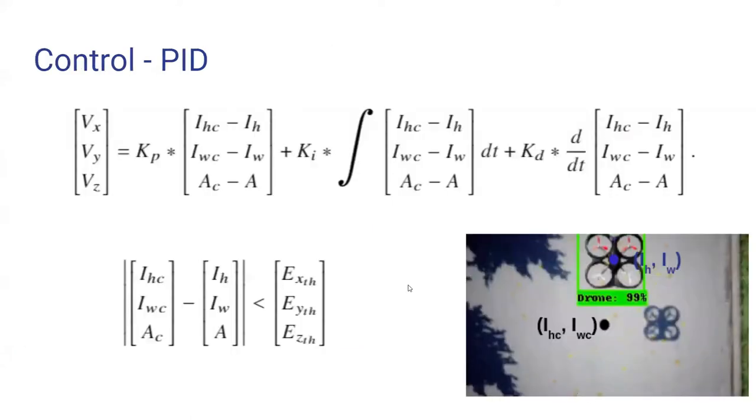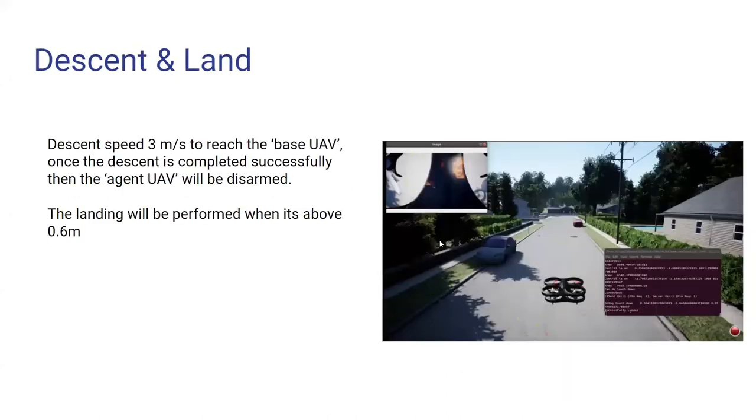For the control mechanism, we have used a PID-based controller to make the agent UAV follow the base UAV. In other words, the center of the detected bounding box of the base UAV needs to converge towards the center of the image frame, and we have used the area of the bounding box to reach the appropriate height or appropriate altitude. Once it's at the appropriate altitude, the descent operation will be carried out and after that the landing with disarming the drone.